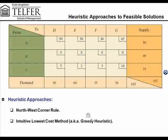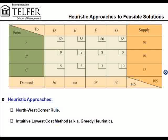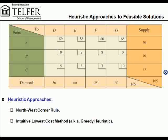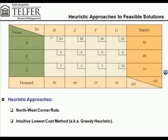Now that we know how these problems are depicted in a transportation grid or graph, we can start talking about how you solve them. We are going to use this as an example, and we're going to use various approaches to solve it. We have a transportation grid with three supply points, A, B, and C, and four demand points, D, E, F, and G. We're given the cost of transportation from these supply points to these demand points, shown in the smaller cells.